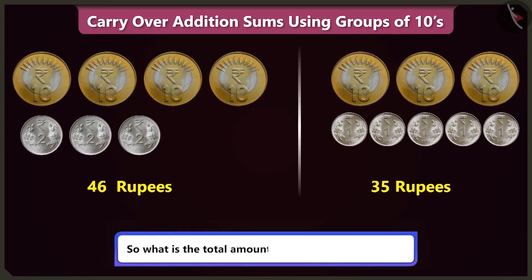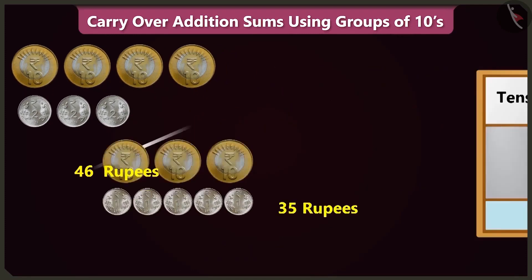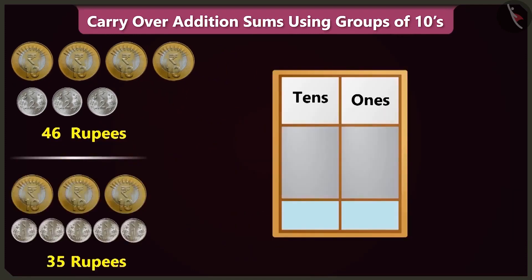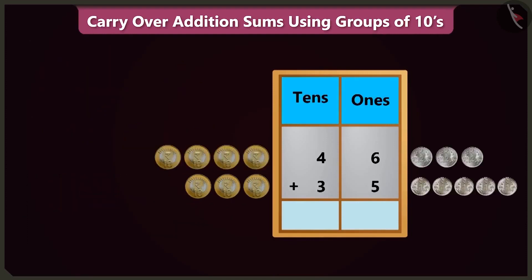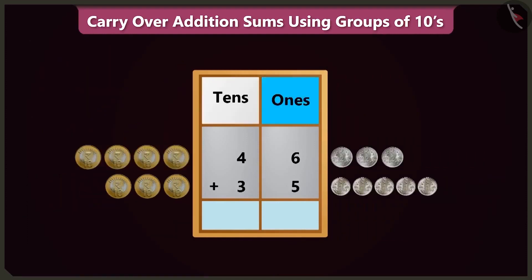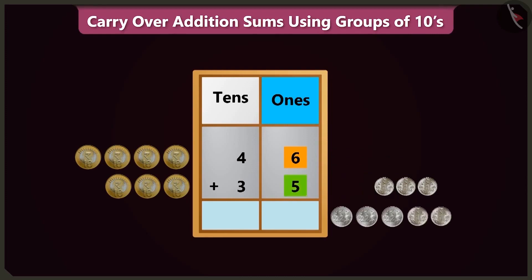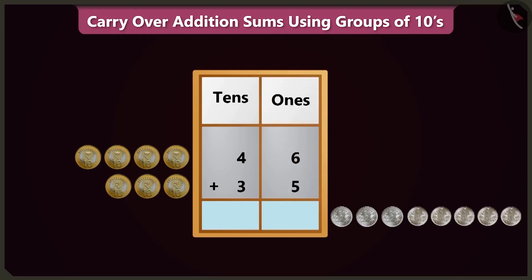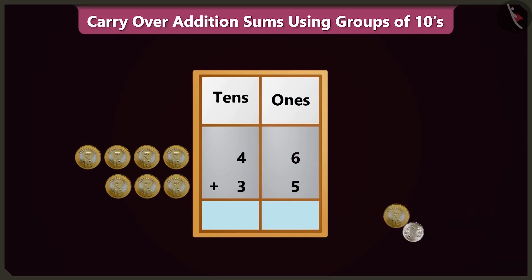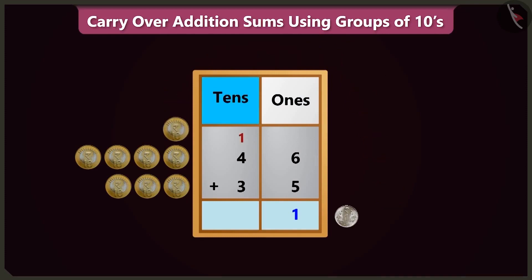So what is the total amount in both piles of coins? To find that out, we have to write both numbers in the ones and tens boxes. To add 5 to 6 in the ones box, count after 6: 7, 8, 9, 10 — and we will get 11. So 11 means 1 ten and 1 one. We write 1 one in the ones box and carry over 1 ten in the tens box.